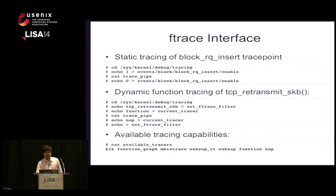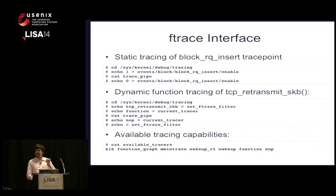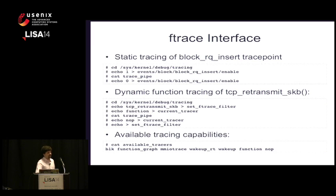Here's the ftrace interface for static tracing of, say, block_rq_insert trace point: cd into /sys/kernel, echo 1 into a file to enable that trace point. You can cat trace_pipe, which synchronously blocks and gives output as events arrive, or cat just trace for buffered output. You can also create snapshots and separate buffers. Then I need to turn it off. For dynamic tracing there are a few more steps: set an ftrace filter, set the current tracer to function, cat trace_pipe, then reset state. I did this once and thought, never again.